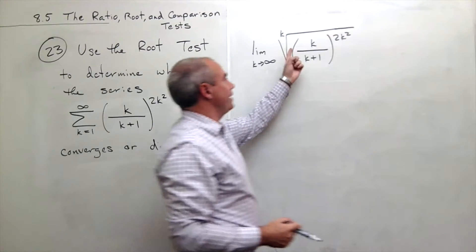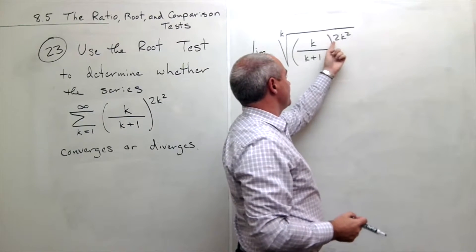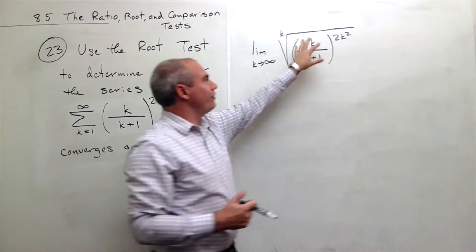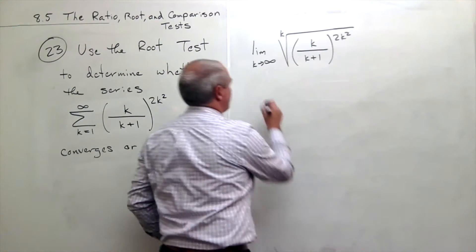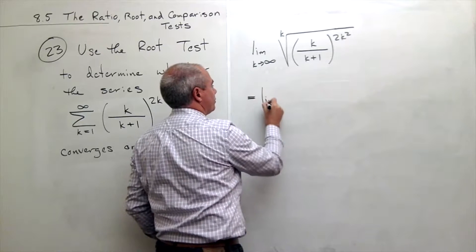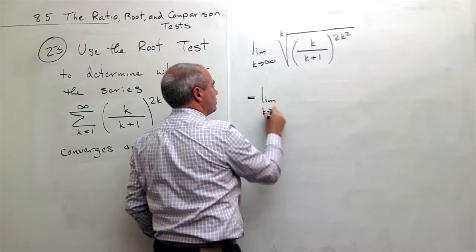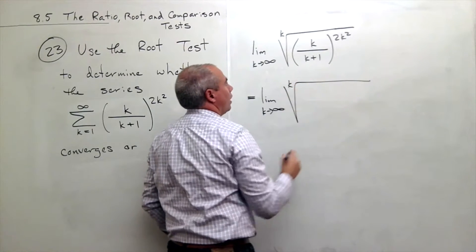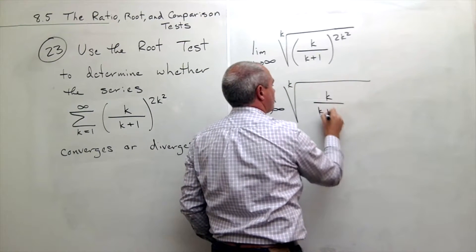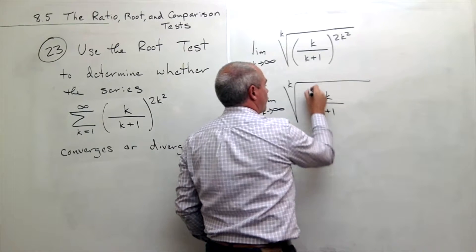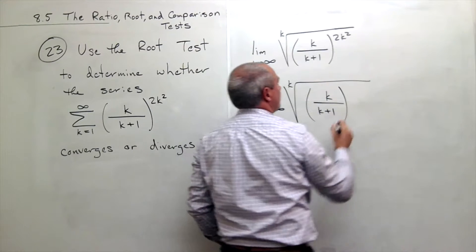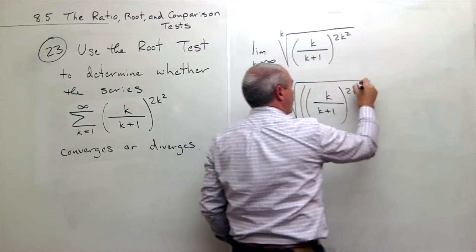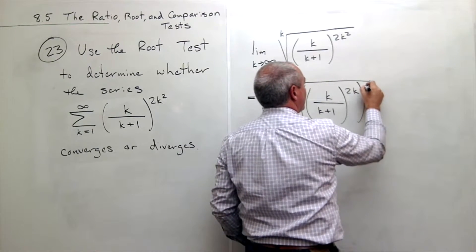Well, one thing I can do right off the bat is I see that this is raised to the 2k squared power. But I can rewrite this slightly and I think it's more understandable. Let me show you. This is the limit as k goes to infinity of the kth root of k over k plus 1 raised to the power